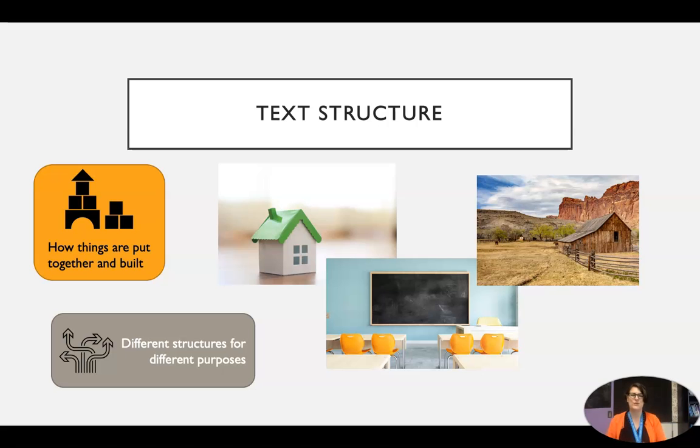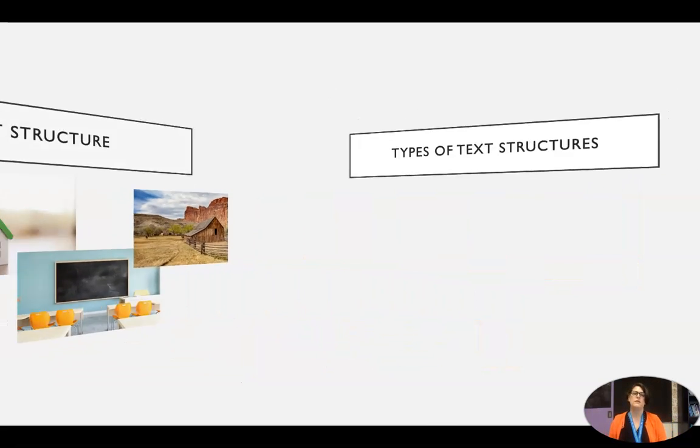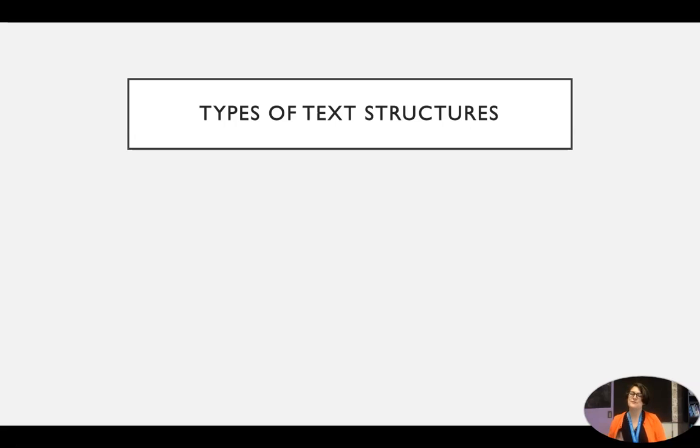That's the idea we have here: different text structures are used for different purposes. Authors pick them depending on what their purpose is for that paragraph or that overall piece. So now let's jump into different types of text structures. There are five different structured types that we are going to go over.